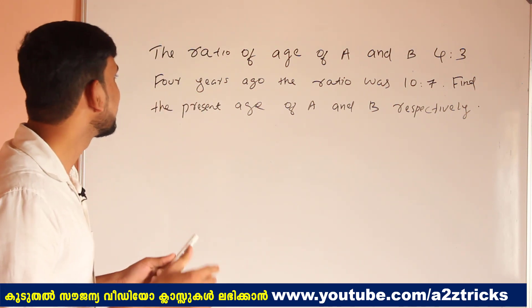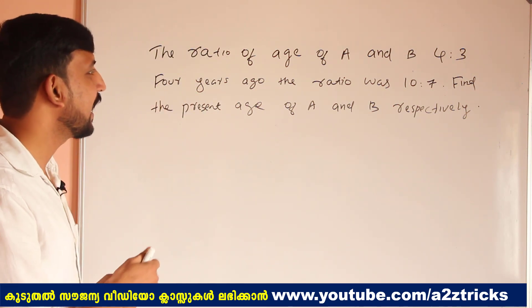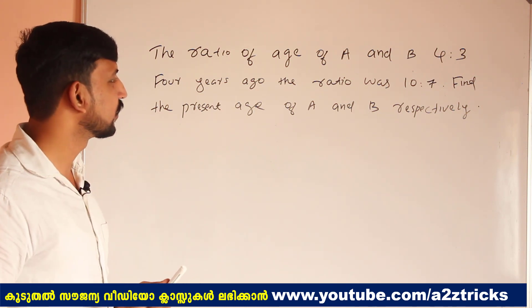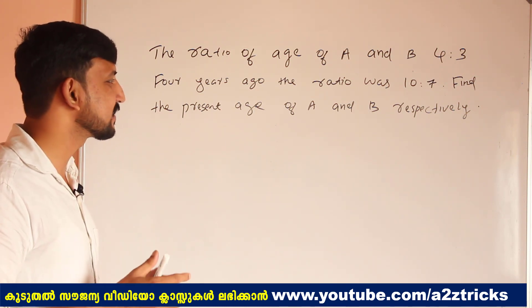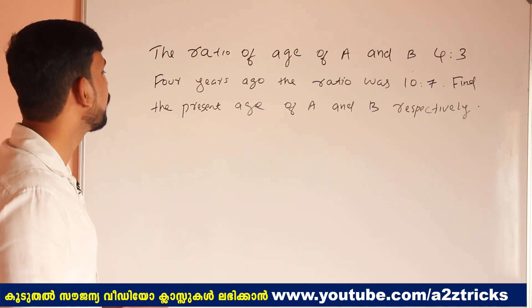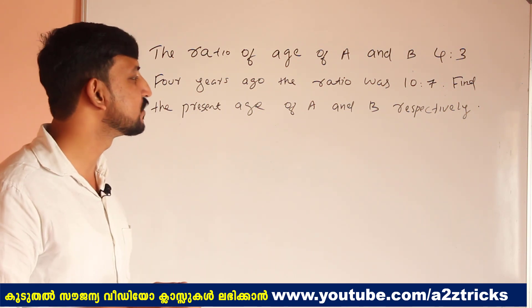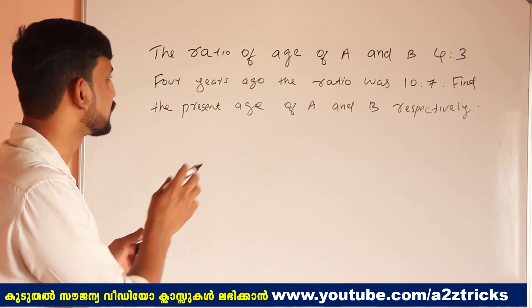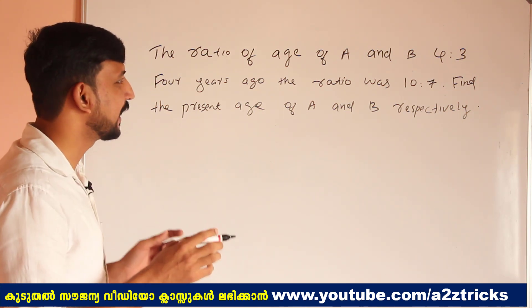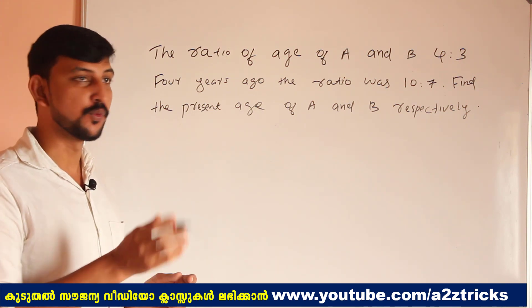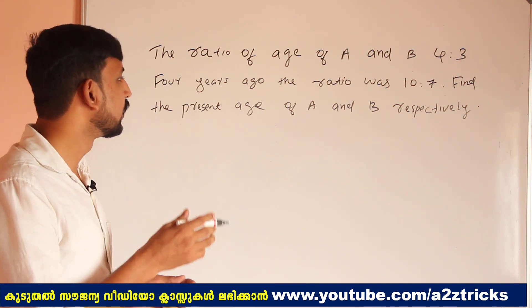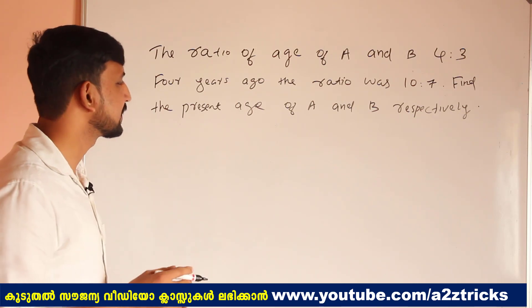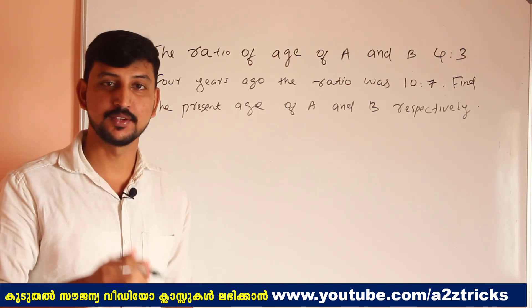The ratio of age of A and B is 4 to 3. Four years ago, the ratio was 10 to 7. Find the present age of A and B respectively.